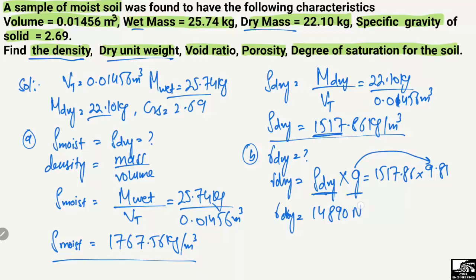Because the dry density is in kilograms per cubic meter and g is in meters per second squared, we get newtons per cubic meter. Converting to kilonewtons, we divide by 1000, so we get 14.890 kilonewtons per cubic meter. This is the dry unit weight for the soil sample.